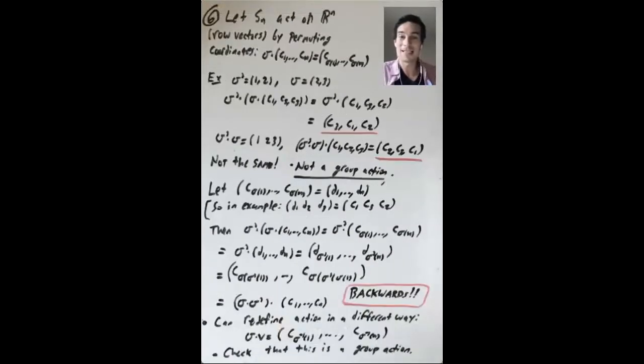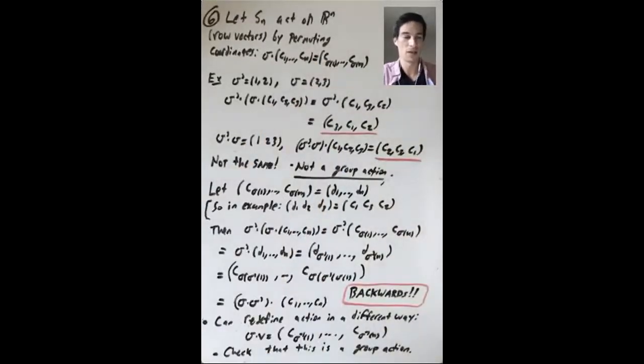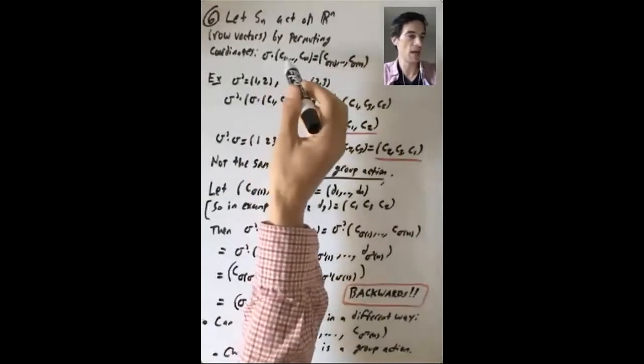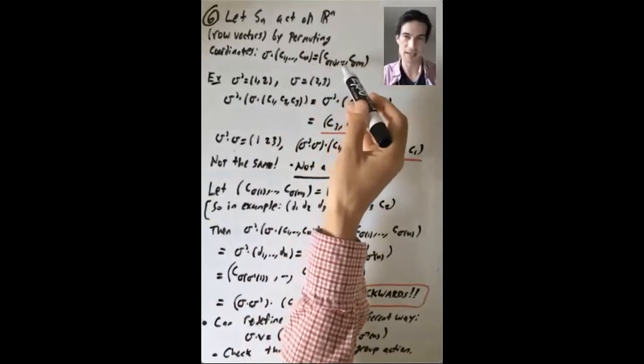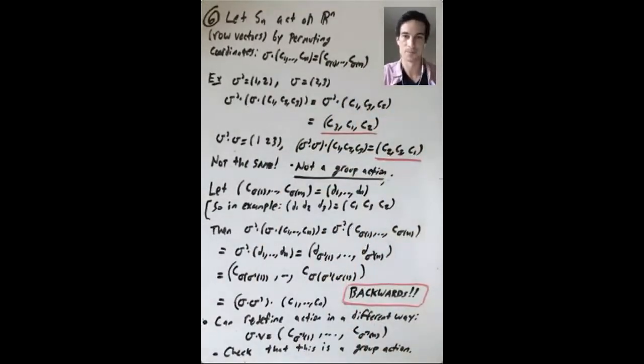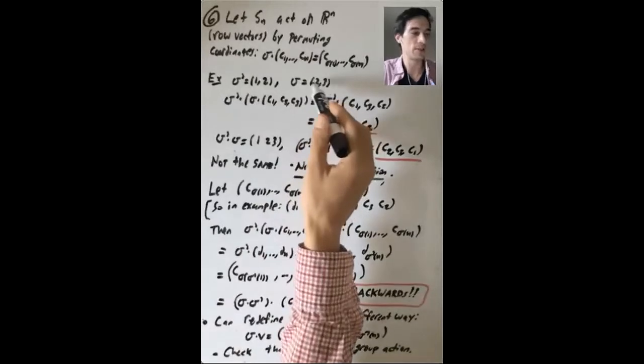For the last example in this video, let's let the symmetric group Sn act on Rn, but now where we think of Rn as row vectors by permuting the coordinates. So sigma acting on (c1 up through cn) is going to be (c sigma 1, c sigma 2 up to c sigma n). So let's do an example. Let's let sigma be the transposition (2,3), sigma prime be the transposition (1,2).